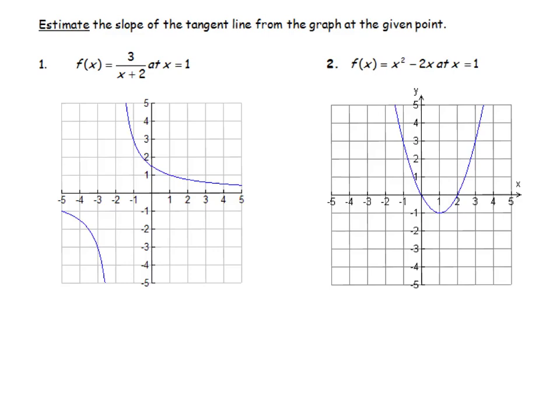I'm supposed to estimate the slope of the tangent line at x = 1. So first thing we need to do is draw the tangent line. At x = 1, this point right here is on the graph, and that is going to be the point of tangency, as we call it. So what you want to do is do your best to draw a tangent line, and your tangent line should just touch the curve at that one point.